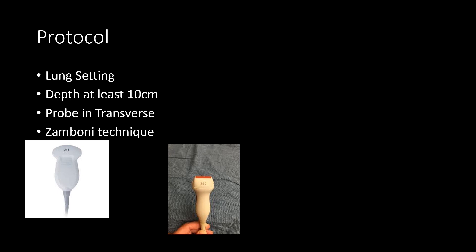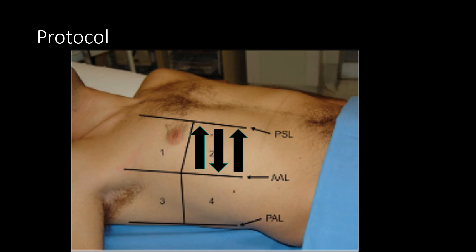Setting the ultrasound machine to a lung setting will optimize the quality of your image. You should set your depth to at least 10 cm. We advise starting with the probe in transverse with the probe marker towards the head. If you do see an abnormality, you can switch the probe to oblique or longitudinal to increase the amount of pleura that you are viewing. You can use either the phased array probe or the curvilinear probe. This slide demonstrates that it's necessary to cover the entire zone with the probe, as demonstrated by the arrows in Zone 2.